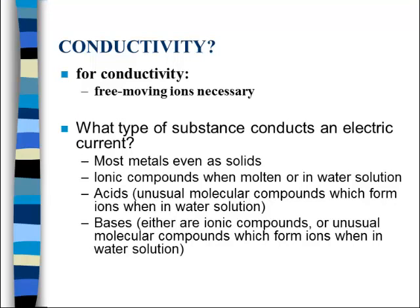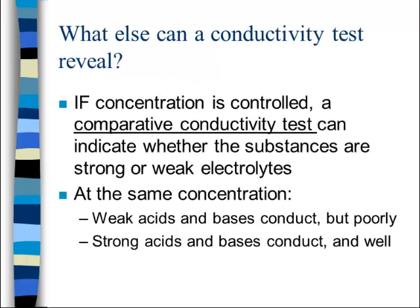So what does conductivity help us see? It helps us understand when there are free-moving ions present. What types of substances conduct an electrical current? Most metals, even as solids. Ionic compounds when molten or in water solution. Acids, which are unusual molecular compounds that form ions when in water solution. And bases, which are either ionic compounds or unusual molecular compounds that form ions in water solution. If concentration is controlled, a comparative conductivity test can indicate whether substances are strong or weak electrolytes. At the same concentration, weak acids and weak bases conduct but poorly, while strong acids and strong bases conduct well.